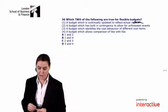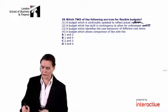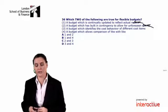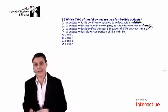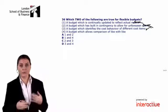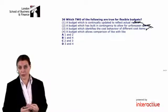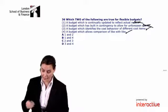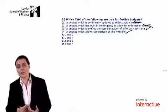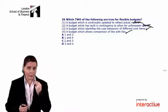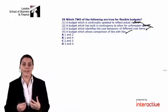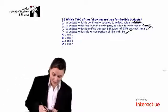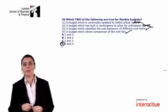Is it a budget which builds in contingency to allow for unforeseen events? No. Is it a budget which identifies the cost behaviour of different cost items? Yes - a flexible budget focuses on our fixed and variable costs. Is it a budget which allows comparison of like with like? Yes, because we adjust for a change in our level of activity; for our variable costs we are recognising that we expect them to change when the level of activity changes. So the correct answer is D - statements 3 and 4 are correct.